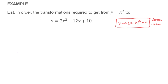Looking at the vertex form, we need to find the values of a, h, and k. To do that, I'm going to compare the parabola we have to the generic parabola in standard form: y equals ax squared plus bx plus c. This lets us state the values of a, b, and c. Looking at our equation, a is equal to 2, b is equal to negative 12, and c is equal to 10.